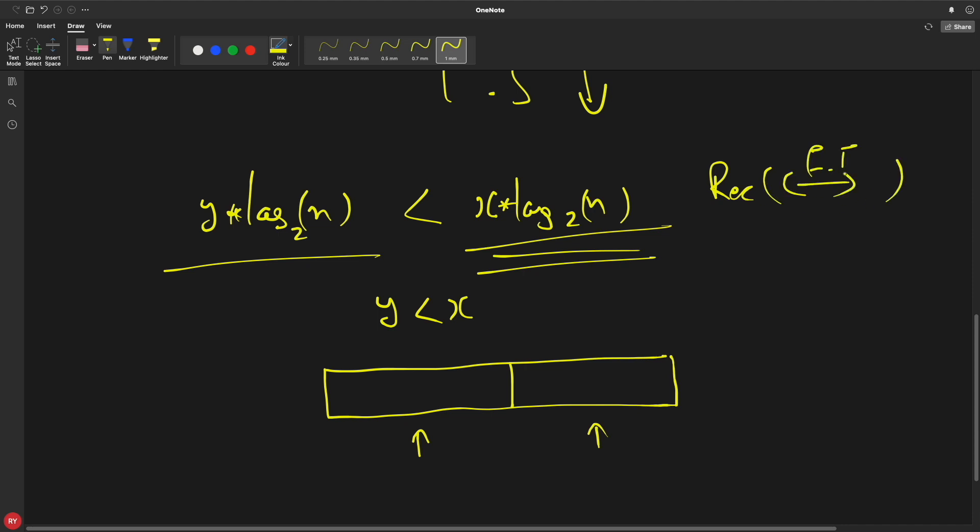So first half and recursion second half will go here and then here you will do whatever operations you want to do with those first half, second half. I mean I'm just talking about merge sort here because that is a very good example to explain this.